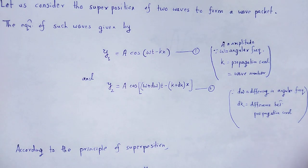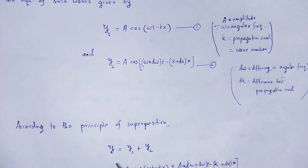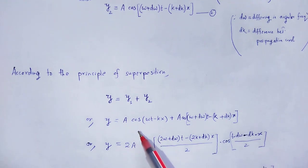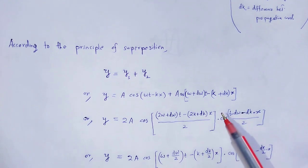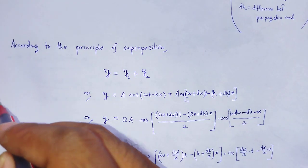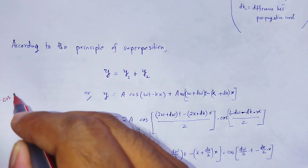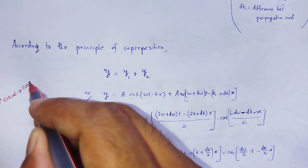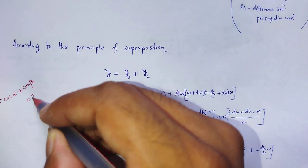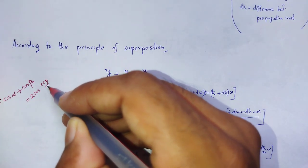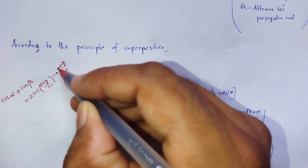These two waves are superimposed with each other according to the principle of superposition. The resultant wave y = y₁ + y₂. Here we use the trigonometric identity: cos α + cos β = 2 cos((α + β)/2) · cos((α − β)/2).